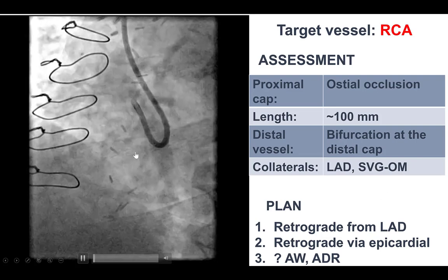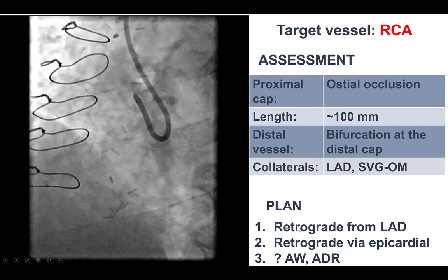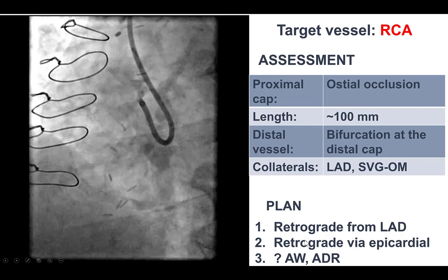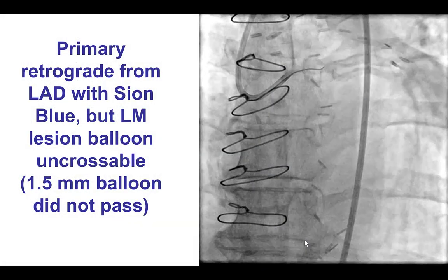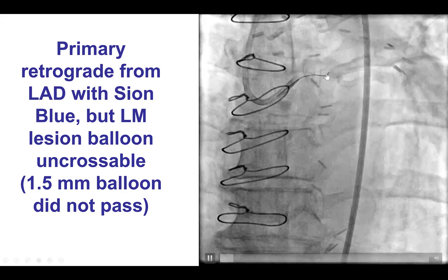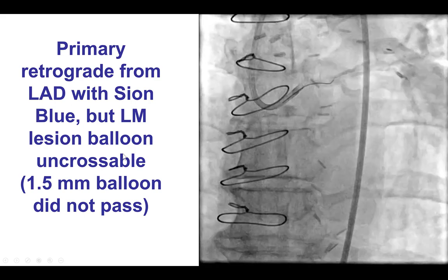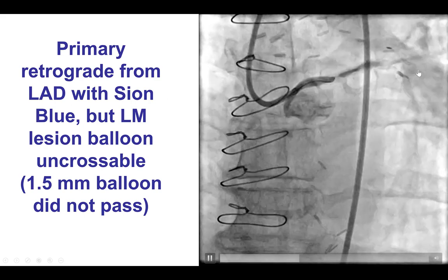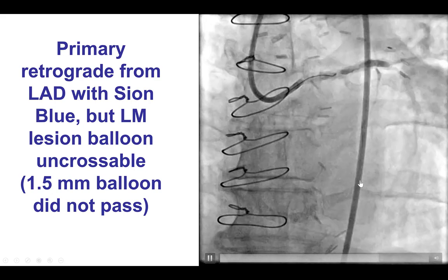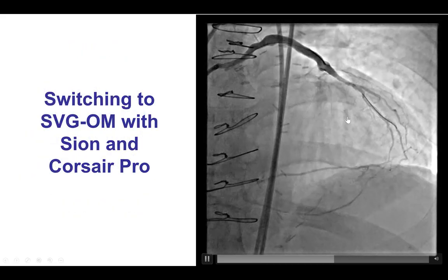We therefore have an ostial RCA CTO with very long occlusion length from the ostium to the crux, heavy calcification, bifurcation on the distal cap, and possible septal collaterals from the LAD and definitely epicardial collaterals from the vein graft to the obtuse marginal branch. Given the ostial occlusion of the right coronary artery, our first approach was retrograde through the septals if possible. Unfortunately, there was significant calcification in the distal left main that could not be crossed with a balloon or microcatheter, and given the small size of the septal collateral, we decided to convert to retrograde through the epicardial collateral from the circumflex.